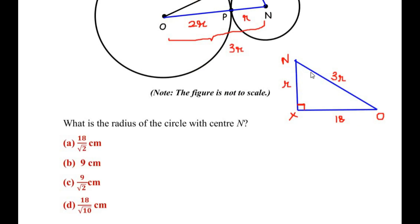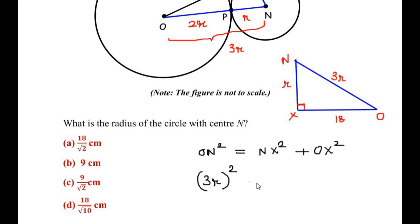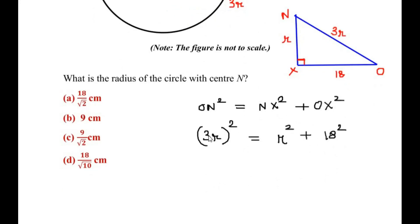Now using the Pythagoras theorem: the hypotenuse squared equals the sum of the squares of the other two sides. So ON² equals NX² plus OX². Substituting: (3r)² equals r² plus 18². This gives 9r² equals r² plus 18².